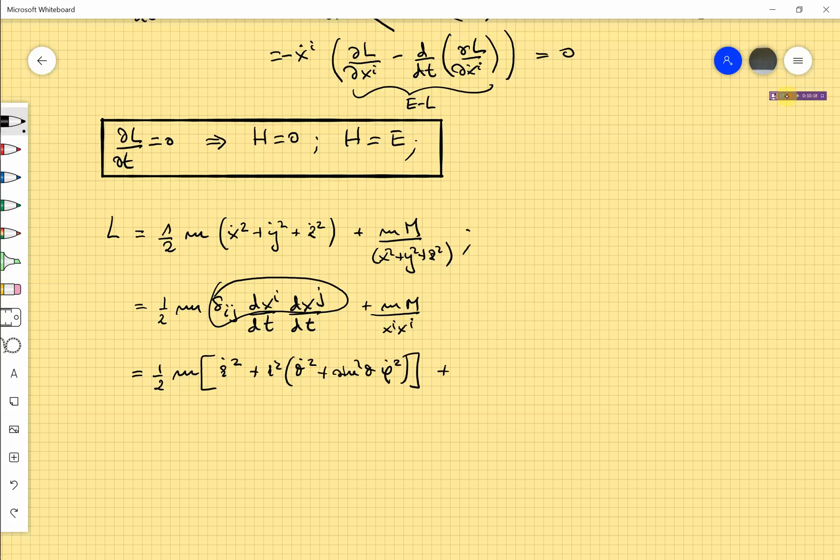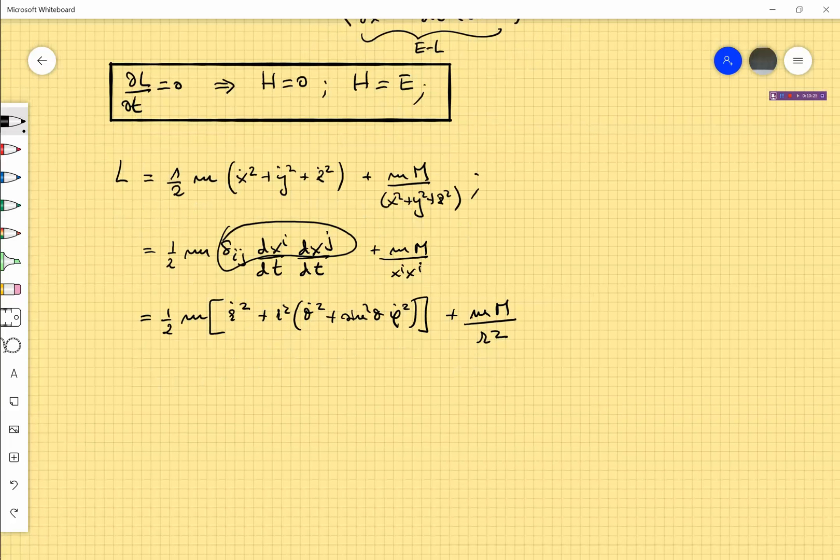What we get is r dot squared plus r squared theta dot squared plus sine squared theta phi dot squared. And xi, xi is evidently r squared.